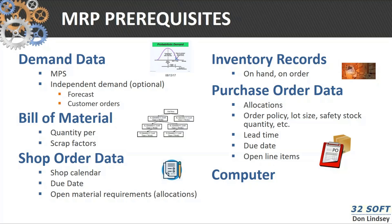...we call scheduled receipts: the due dates, the anticipated receipt in inventory, open material requirements, and allocations — which we'll talk about — and then inventory records, quantity on hand. I hope we all have a cycle count program where we do physical inventory, because that's the starting point of MRP. Purchase orders — same as shop orders — you need to know what your lead times are.